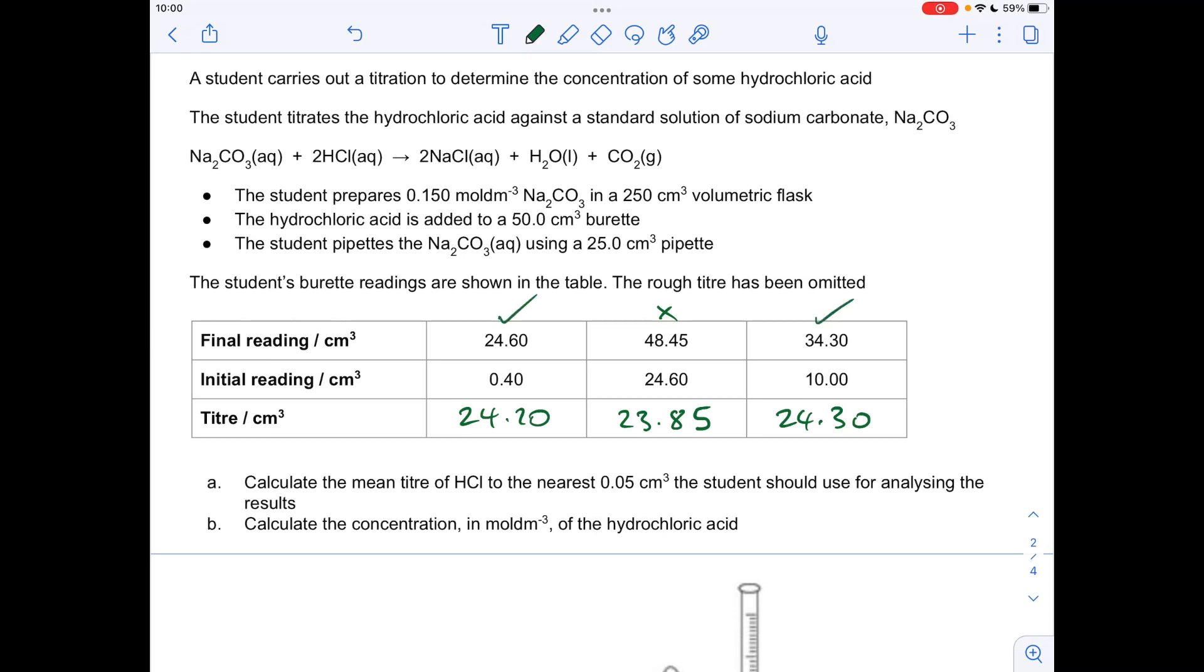We base the mean titra on these two results only, so the mean titra is 24.25 cm cubed.